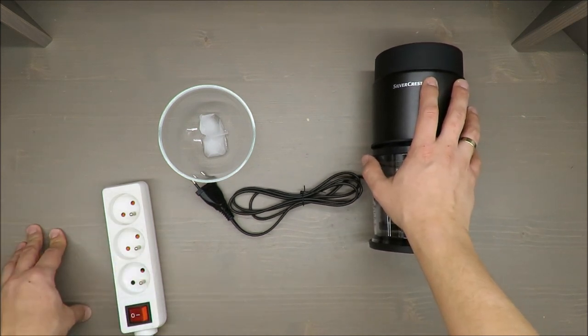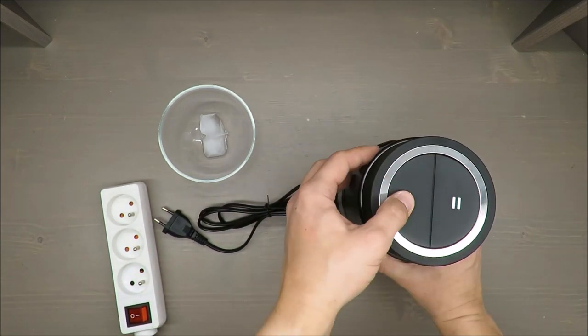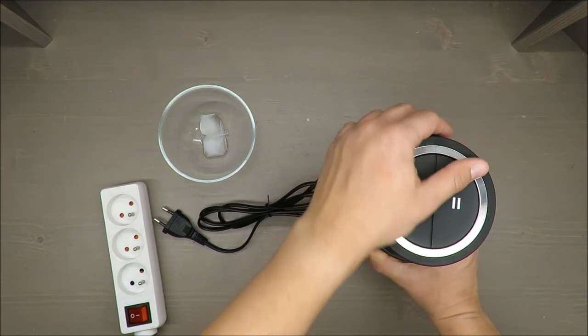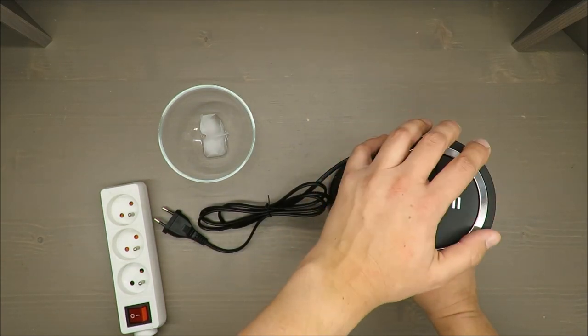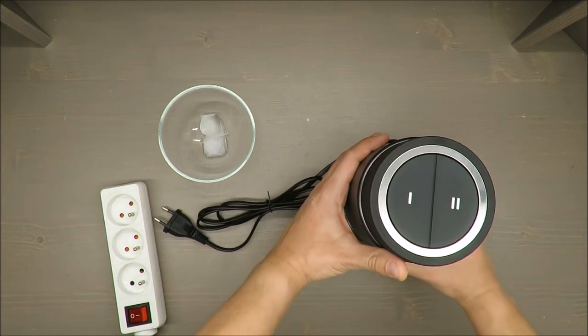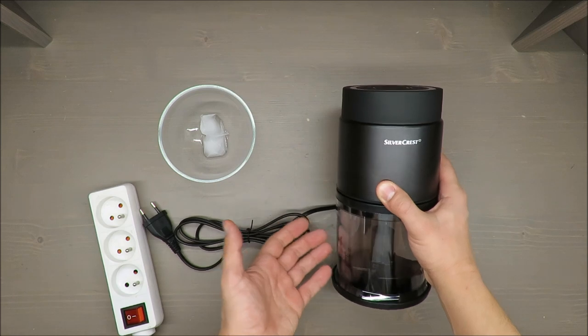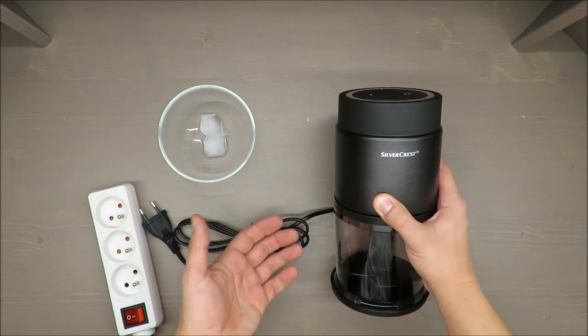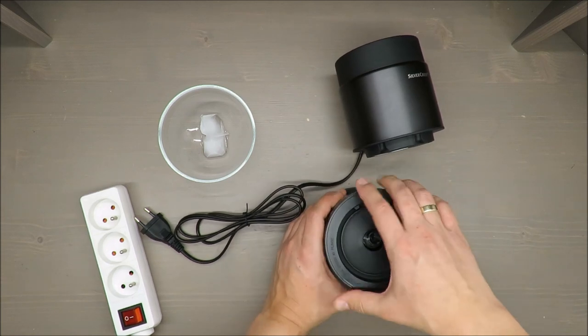Something about basic features: two speed settings, one and two. Yes, it has two blades. Capacity is up to 300 milliliters. Power consumption is 500 watts only. What I'm missing is some kind of indicator to distinguish the first speed from the second one.